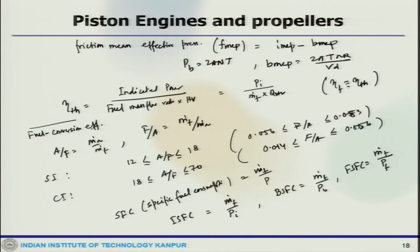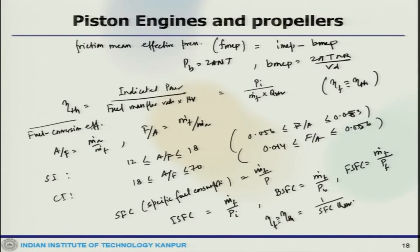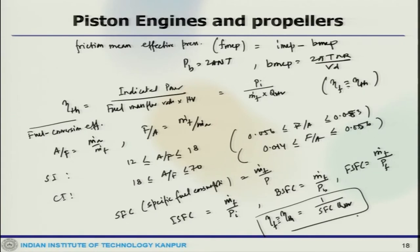The fuel conversion efficiency eta_F can be written as 1 by SFC times heating value. So specific fuel consumption is inversely proportional to thermal efficiency. There are different ranges of fuel levels which can be used, each with different efficiency levels.